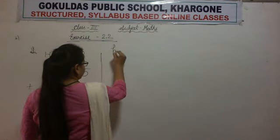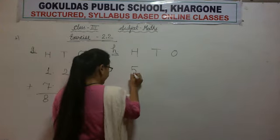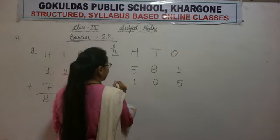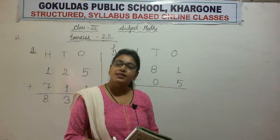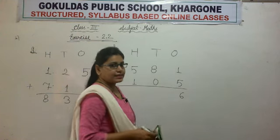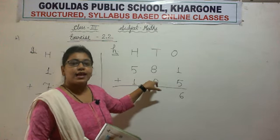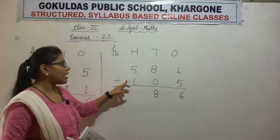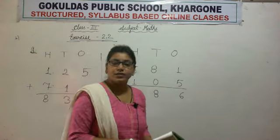Now part X. Again we write 100's, tens, and ones. The numbers are 581 and 105. Again 1 in the 1's place: whenever 1 is added to any number it gives its successor, so the successor of 1 is 2 — wait, 1 plus 5: successor of 5 is 6. Now 8 plus 0: by zero property, 8 plus 0 is 8. Now 5 plus 1: by order property, 1 plus 5 is 6, so 5 plus 1 is also 6.